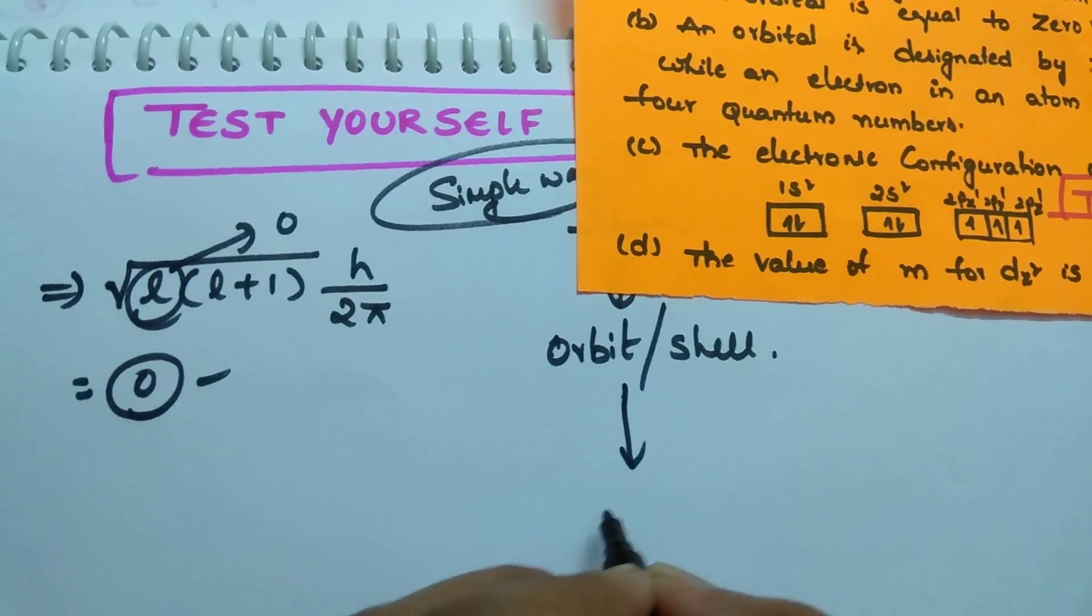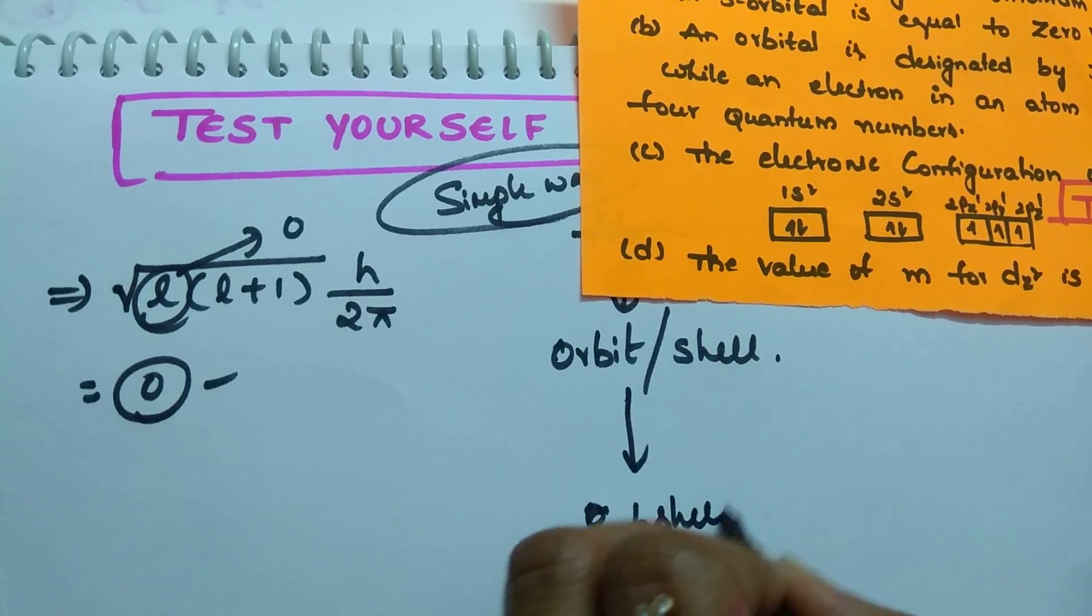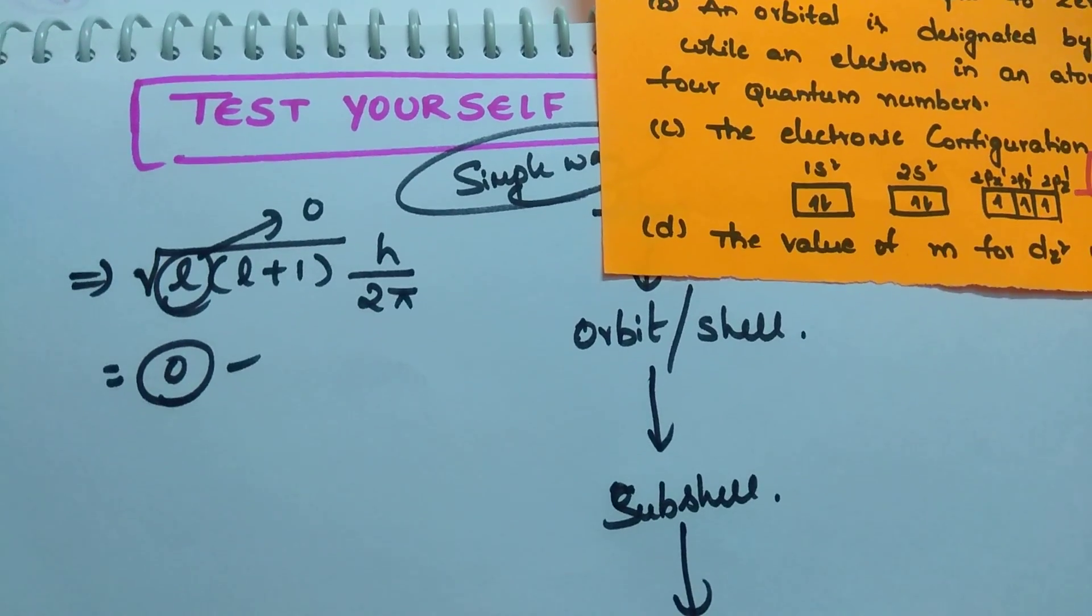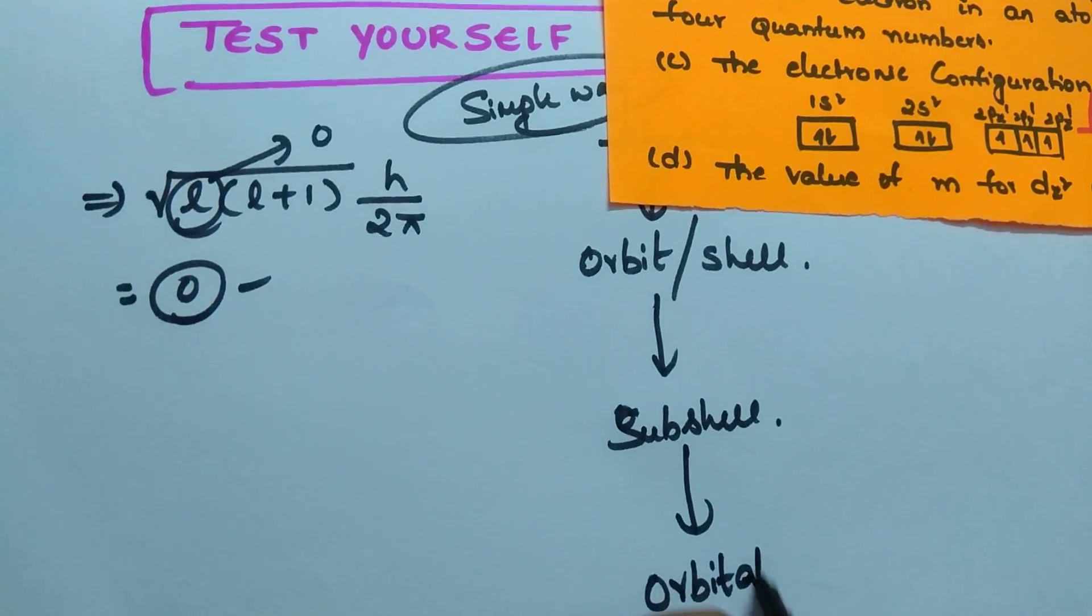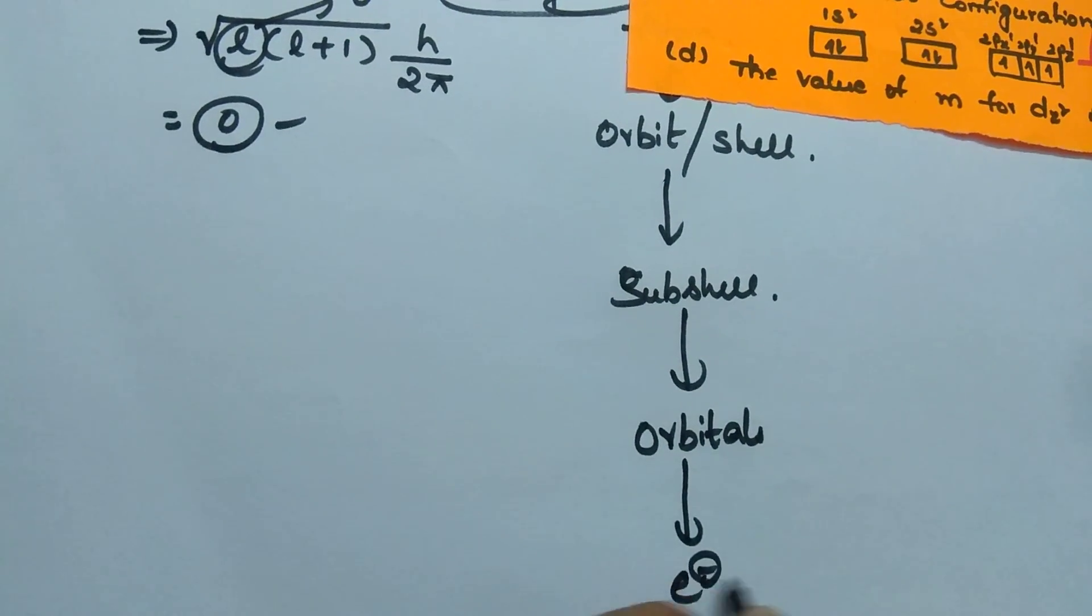Orbit consists of again sub-shells, right? Sub-shell. Sub-shells consists of orbitals. You can say orbitals. Again, orbital where in the orbital electrons are present.